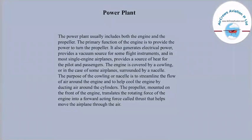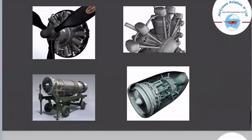The power plant includes both the engine and the propeller. The primary function of the engine is to turn the propeller. It also generates electrical power, provides a vacuum source for some flight instruments, and in most single-engine airplanes provides a source of heat for the pilot and passengers. The engine is covered by a cowling or, in some airplanes, surrounded by a nacelle, which streamlines airflow around the engine and helps cool it by ducting air around the cylinders. The propeller mounted at the front of the engine translates the rotating force into a forward-acting thrust force.